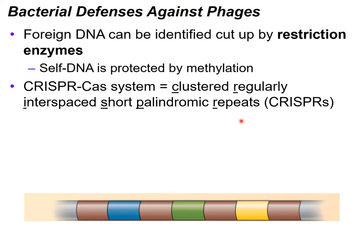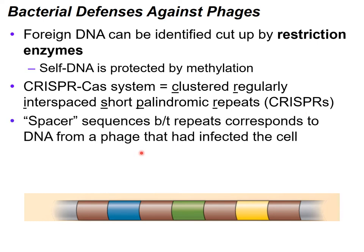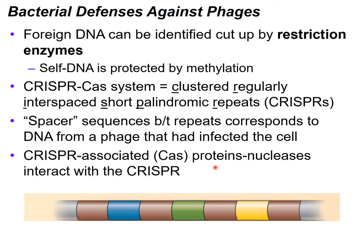This is the basis for the CRISPR-Cas system. The CRISPR-Cas system is called Clustered Regularly Interspaced Short Palindromic Repeats or CRISPRs. The spacer sequences in between the repeats correspond to DNA from a phage that had infected the cell previously. The CRISPR-Cas proteins are nucleases that interact with CRISPRs. The CRISPR-Cas system is naturally present in bacteria but has now been used in biotechnology.